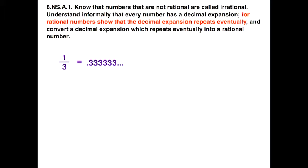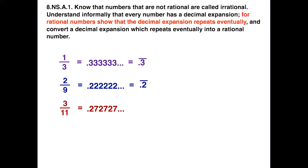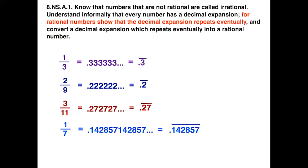Let's look at some examples of rational numbers. 1 over 3 has a repeating pattern of the numeral 3, so we can express it with the vinculum. 2 over 9 turns out to be a repeating pattern where we have 2s that repeat. 3 over 11 is a little different — we have a pattern where two digits repeat: 2 and 7. 1 over 7 has an interesting pattern: we have to go out six digits to see the repeating pattern, which is 1, 4, 2, 8, 5, 7 that repeat.